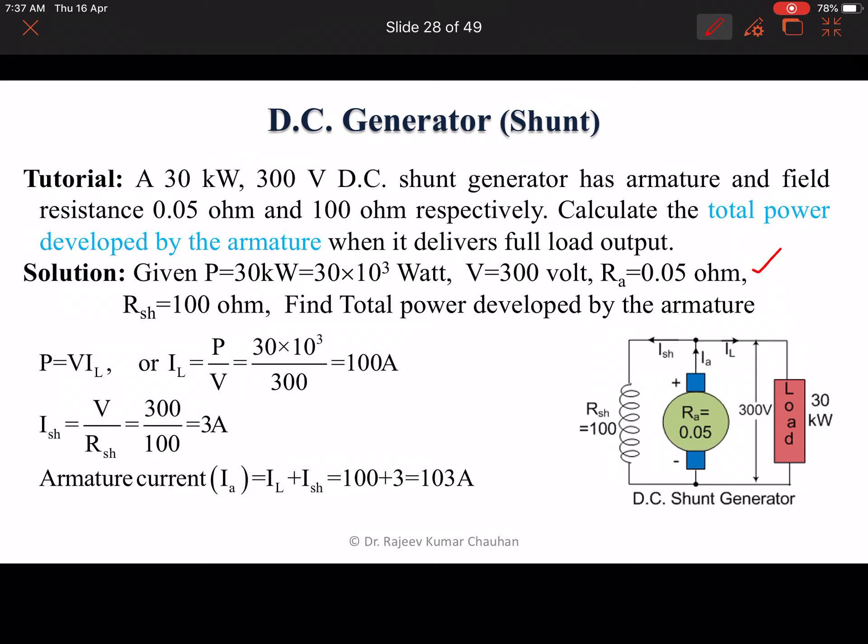We know P equals V times IL. From here we can calculate the value of IL: IL equals P by V, or 30 kilowatt divided by 300 equals 100 ampere. This is the load current, meaning the generator is supplying 100 ampere load current.